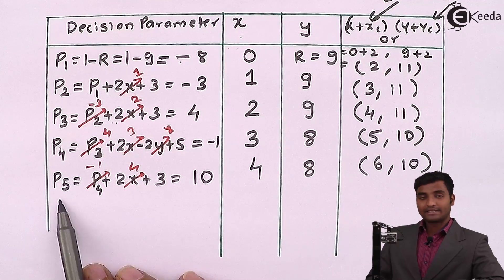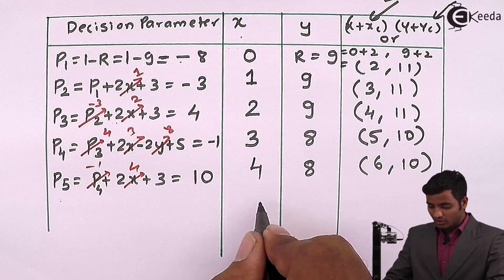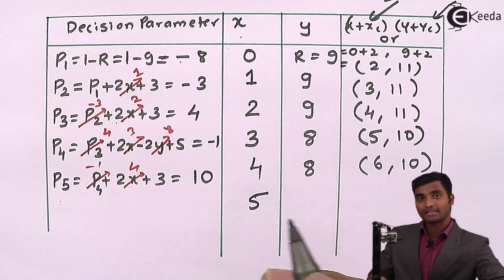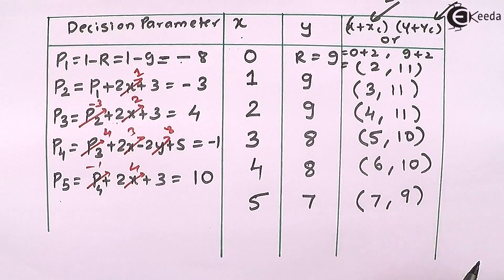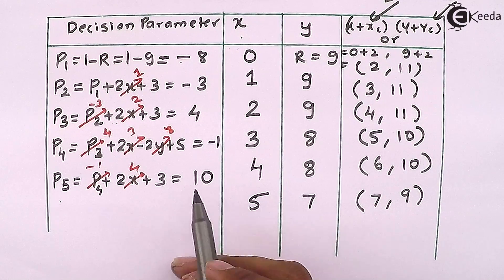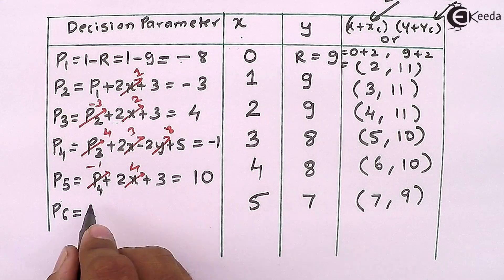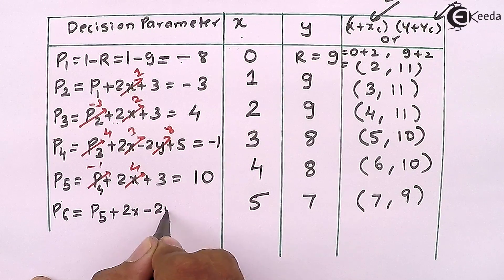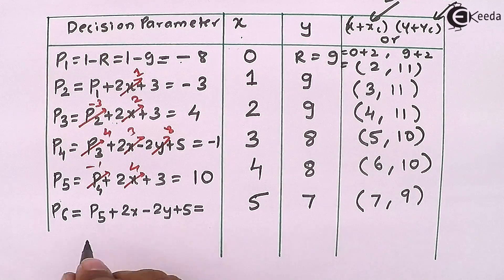P5 = 10, so the decision parameter is greater than 0. X is incremented by 1 to become 5 and Y is decremented by 1, so 8 - 1 = 7, giving coordinate (7, 9). P6 = P5 + 2X - 2Y + 5 = 10 + 2(5) - 2(7) + 5 = 11, which is also greater than 0.